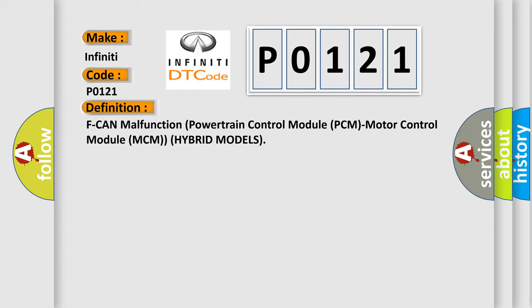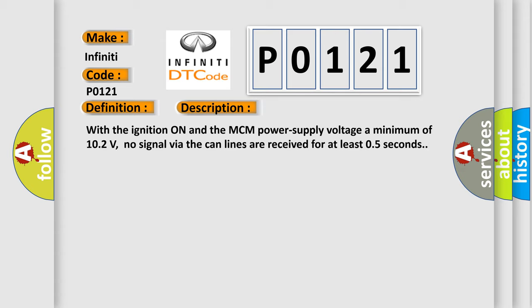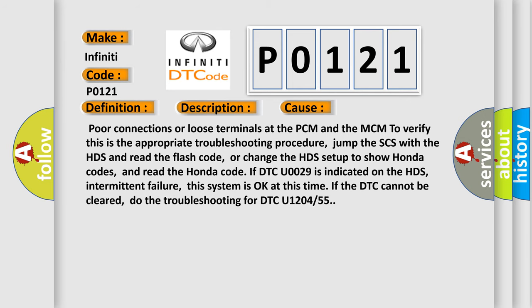The basic definition involves a malfunction in the powertrain control module (PCM) or motor control module (MCM) for hybrid models. With the ignition on and the MCM power supply voltage at a minimum of 10.2 volts, no signal via the CAN lines is received for at least 0.5 seconds. This diagnostic error occurs most often due to poor connections or loose terminals at the PCM and the MCM. To verify this, jump the SCS with the HDS and read the flash code, or change the HDS setup to show Honda codes and read the Honda code. If DTC U0029 is indicated on the HDS, the system is okay at that time. If the DTC cannot be cleared, do the troubleshooting for DTC U1204 or 55.